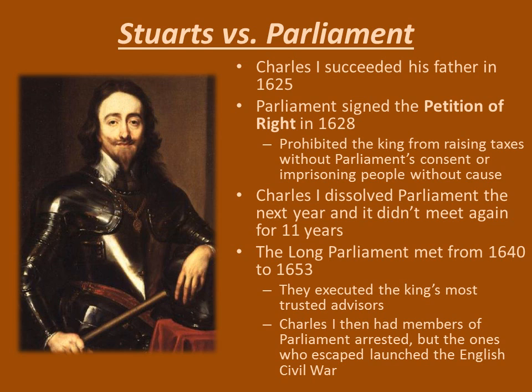Parliament in 1628 drew up a document called the Petition of Right — a big sweeping bill that said the king could not raise any taxes or imprison people without consulting them or without having a good reason to.